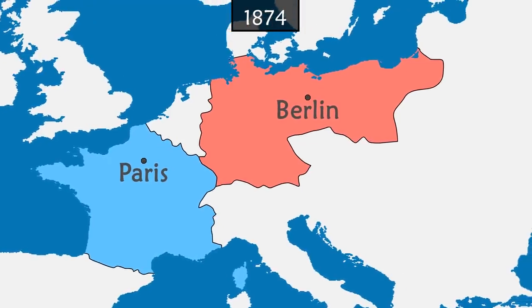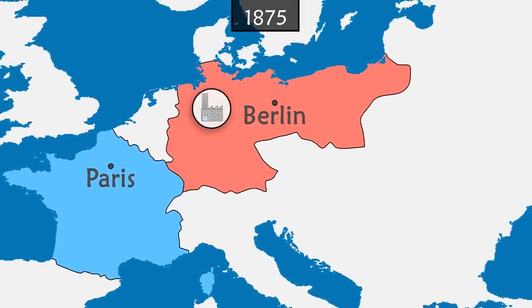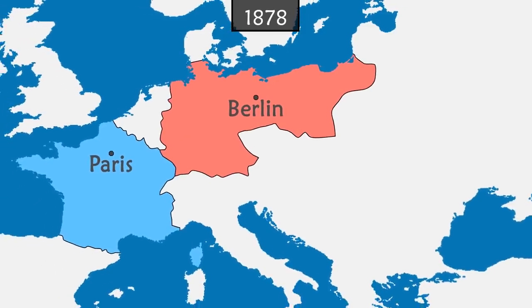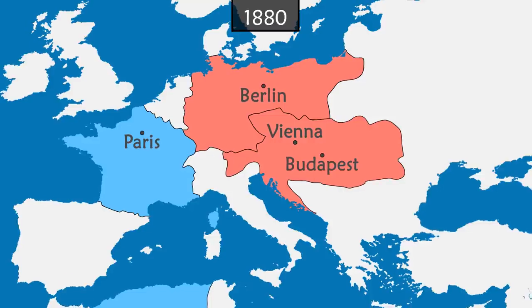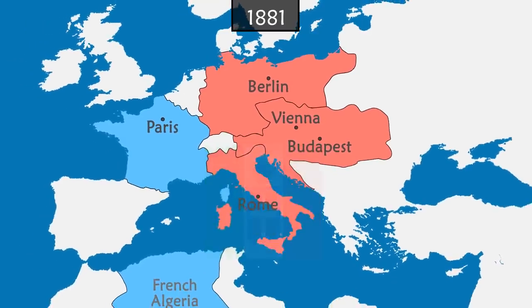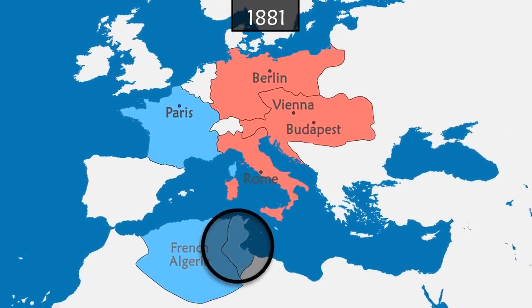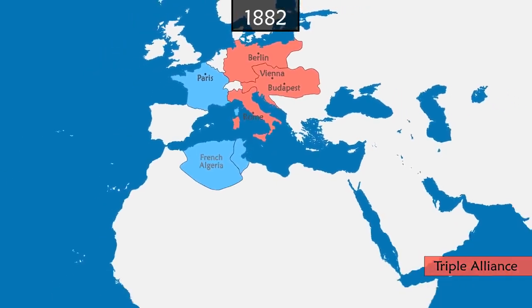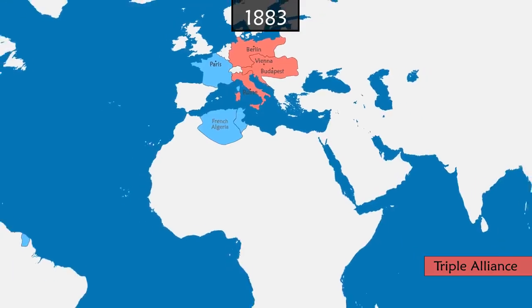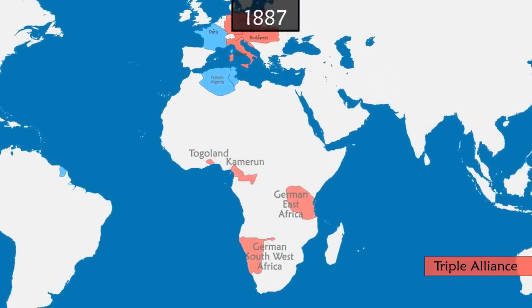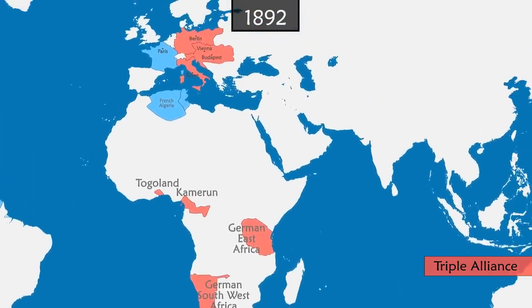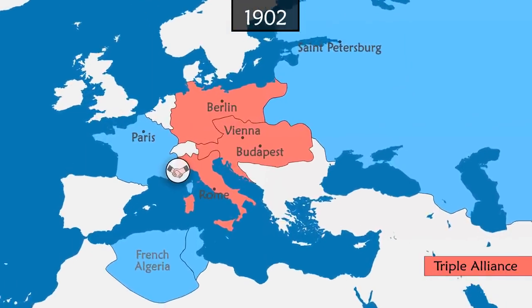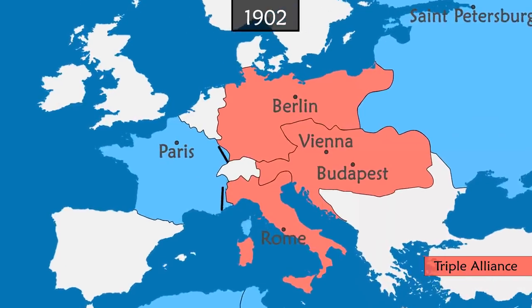In the following years, Germany would greatly advance its industry and economy. The country also builds alliances, first with the Austro-Hungarian Empire and then with Italy, which is frustrated by France colonising Tunisia. The three form the Triple Alliance. Growing in power and status, Germany begins colonising African territories. France allies with the Russian Empire and signs a secret pact of non-aggression with Italy, thus avoiding a second front in case of war.